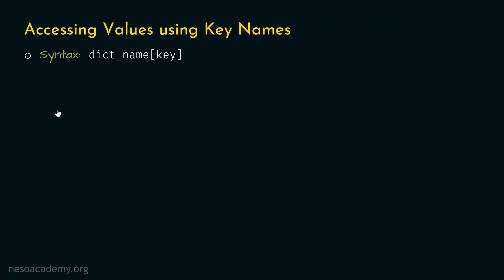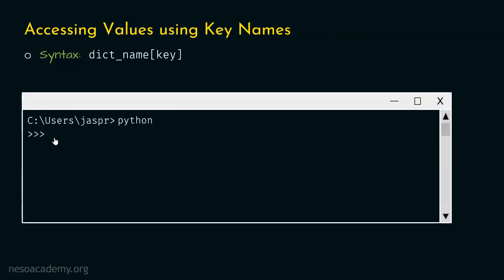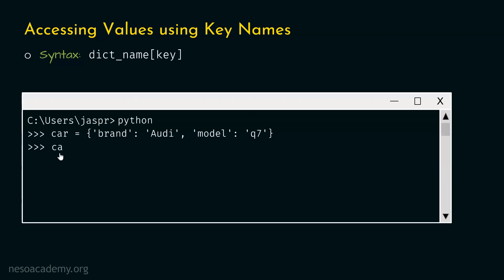For example, let's open our command prompt and activate the Python interactive shell. Let's type this dictionary: car equal to brand Audi and model Q7. Let's say we are interested in accessing the value Audi. We can access this value by specifying the name of its key within square brackets. Let's hit enter and type car bracket brand. We will get Audi as the result.